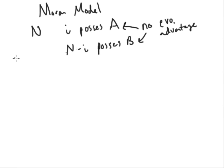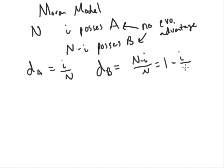So we're going to first determine the probability, which we'll call D_A, that somebody with allele A dies. And that's just going to be i over N. Because we're randomly picking somebody out of this whole big mess of N, and the probability that you pick one person with A is just i over N. The probability that you pick somebody to die that has allele B is going to be N minus i over N, or equal to 1 minus i over N.